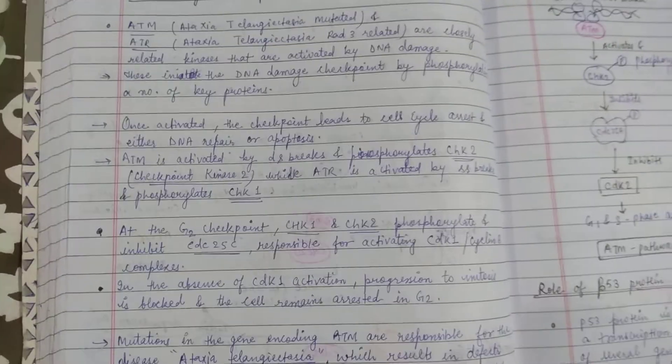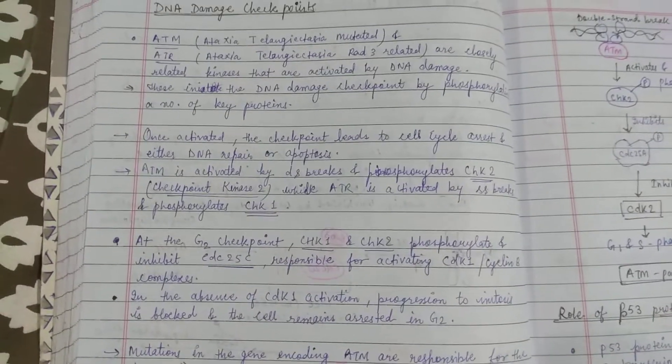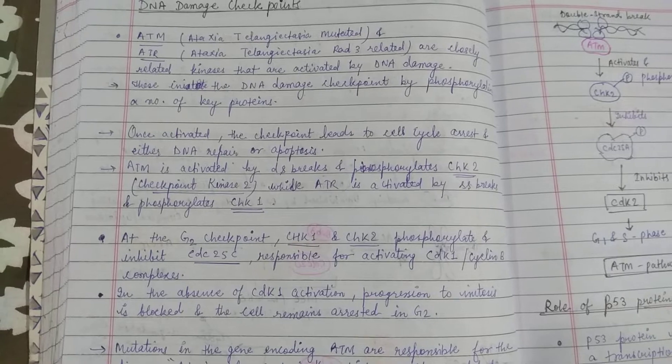ATM and ATR are the gene coding proteins which are responsible for double strand break or single strand break in DNA.